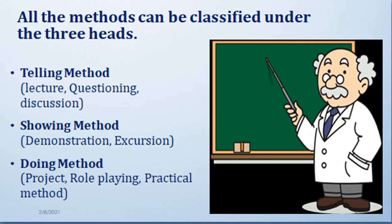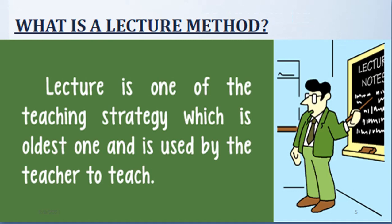In the telling method, the three things that come under it are: lecture, questioning, and discussion. In the showing method, we give a demonstration — we show students what something is. The doing method is a kind of project or role-playing in which students are more active. Students are more active in the doing method, in the project and in role-playing.